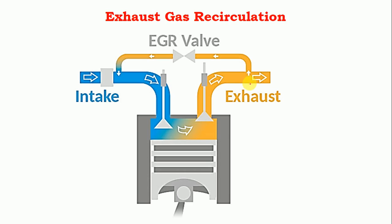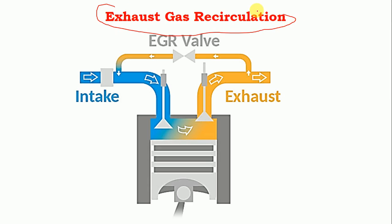In front of you there is a construction diagram. We are going to discuss about construction, working, advantages, and disadvantages of the exhaust gas recirculation system. This is a cylinder with an inlet valve and an exhaust valve, and this is the piston. The blue color pipeline is the inlet manifold, and the orange or yellow color pipeline is the exhaust outlet from which exhaust gases are taken outside. By the name we can understand that exhaust gas recirculation is a system in which exhaust gases are once again recirculated into the system in order to reduce NOx.